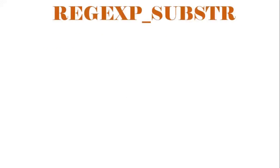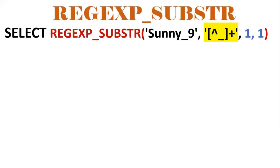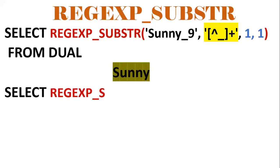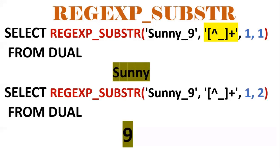We will use REGEXP_SUBSTR — regular expression substring. If you want to extract any part of a string, use REGEXP_SUBSTR. For example, if I need to get only 'Sunny' (i.e., up to the underscore), I use (1, 1). If I want to extract the part after the underscore, such as the number nine, I use (1, 2). So if you want the part before the underscore use (1, 1), and for the part after the underscore use (1, 2).